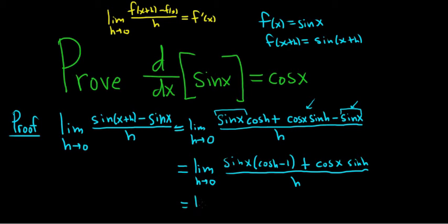Then we can rewrite this further. This is the limit. As h approaches 0, we can break it up now. See, this is going to be a familiar limit here. So this can be written as sine x times and this is cosine h